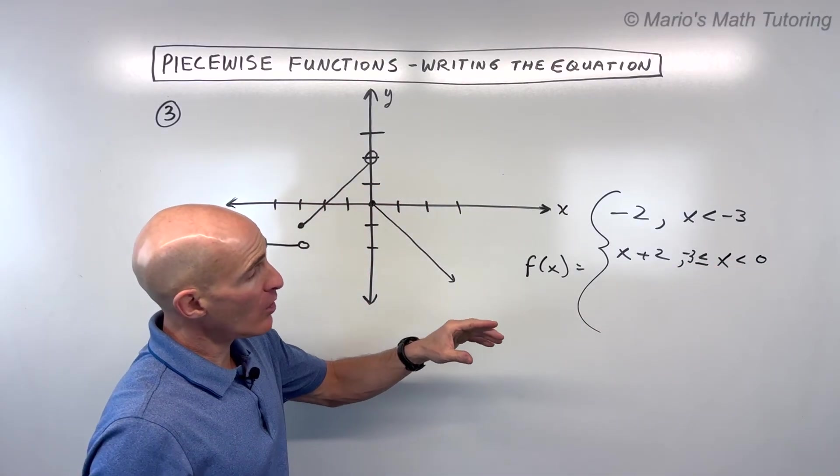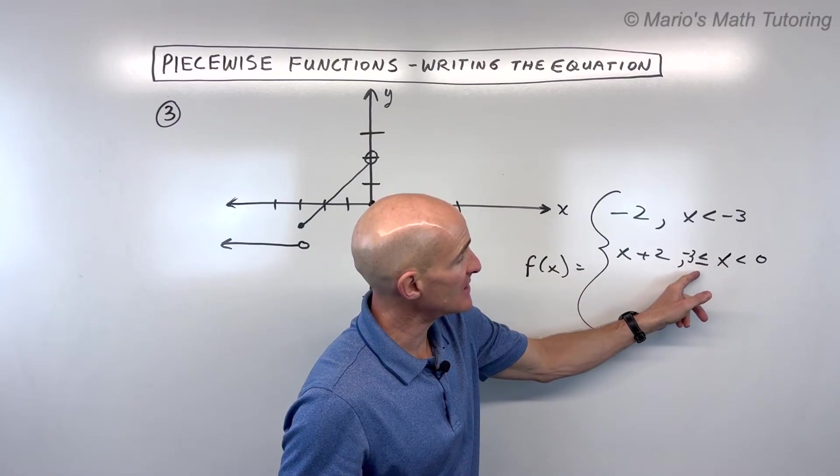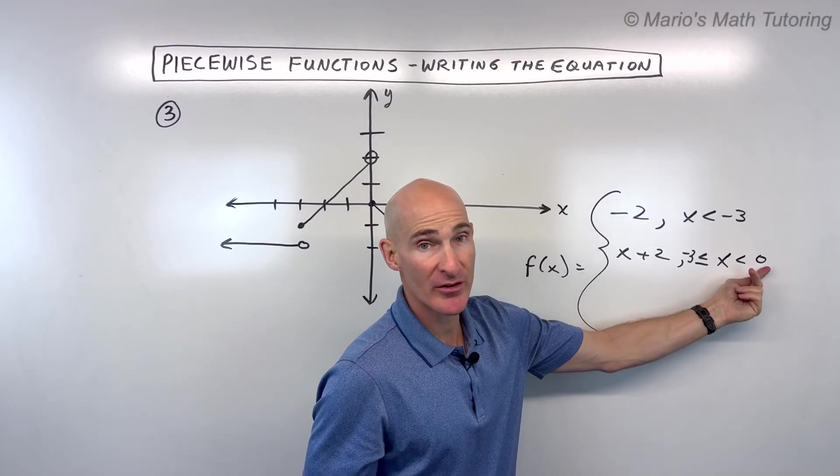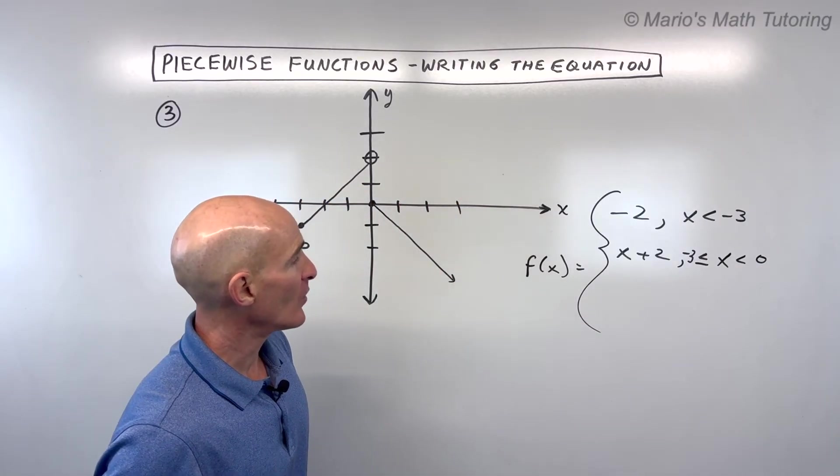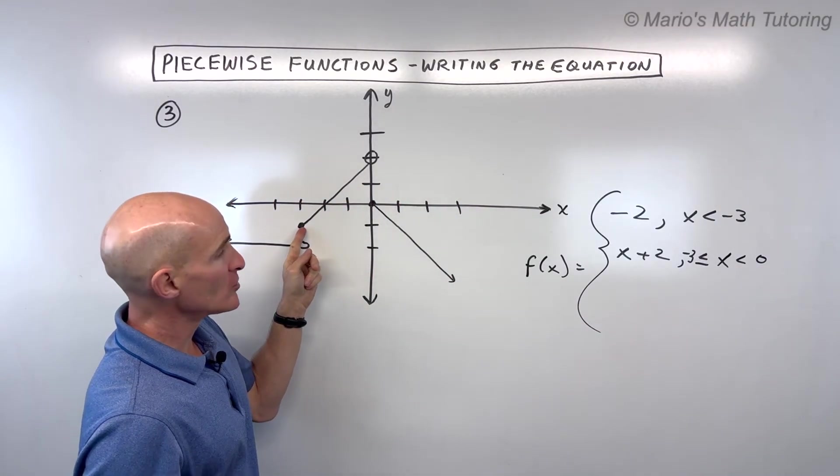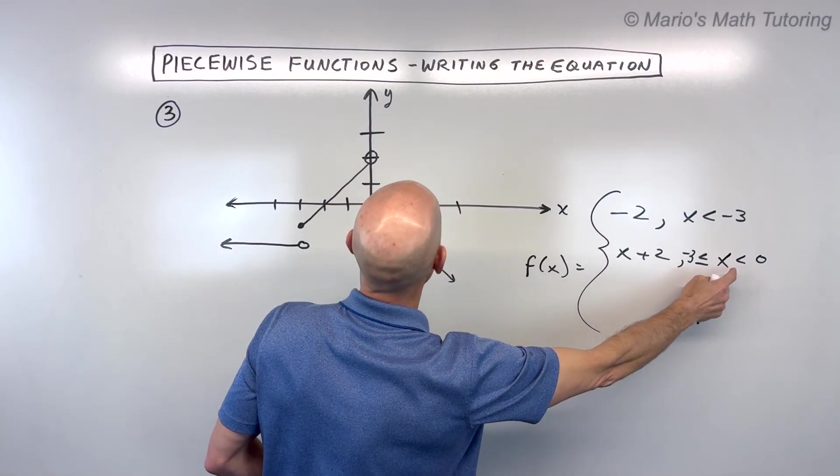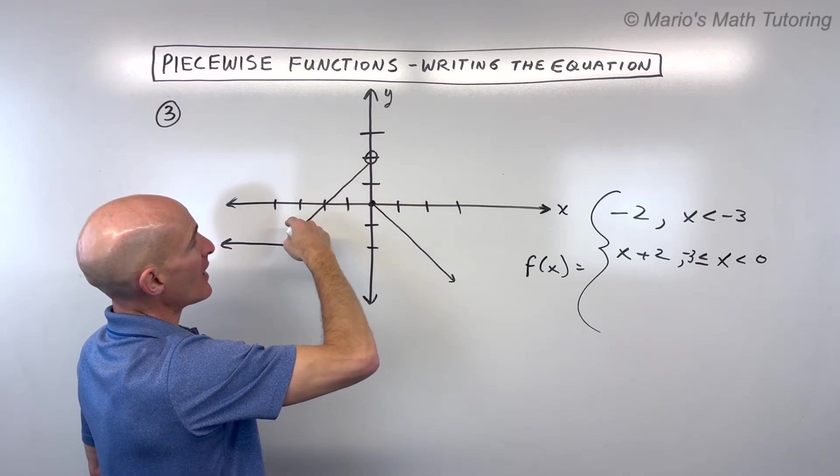When you write compound inequalities like this, you always want these to be less than symbols or pointing to the left. You put the variable in the middle, the smaller number on the left, the larger on the right. That's the way that you write those. And again, closed here so equal to, open here so less than but not equal to. And that's the middle graph here.